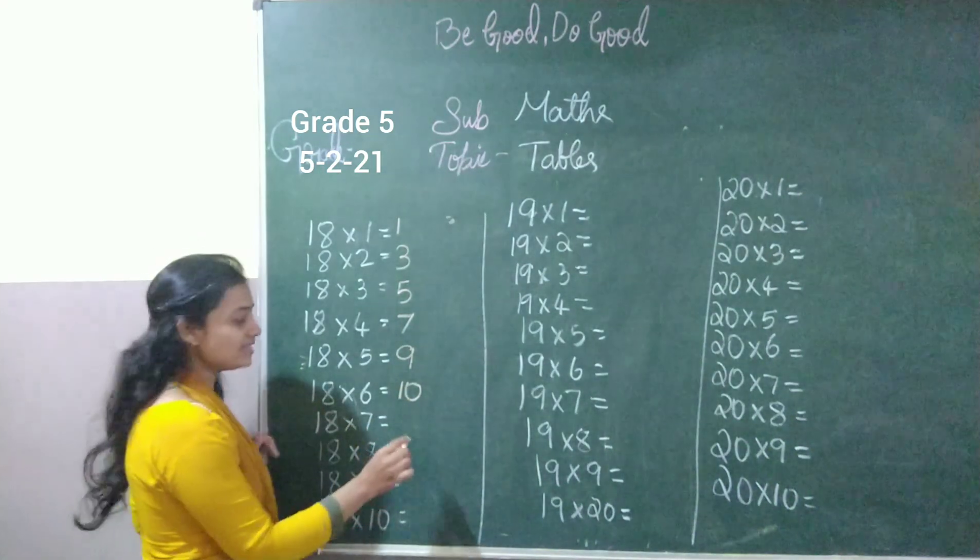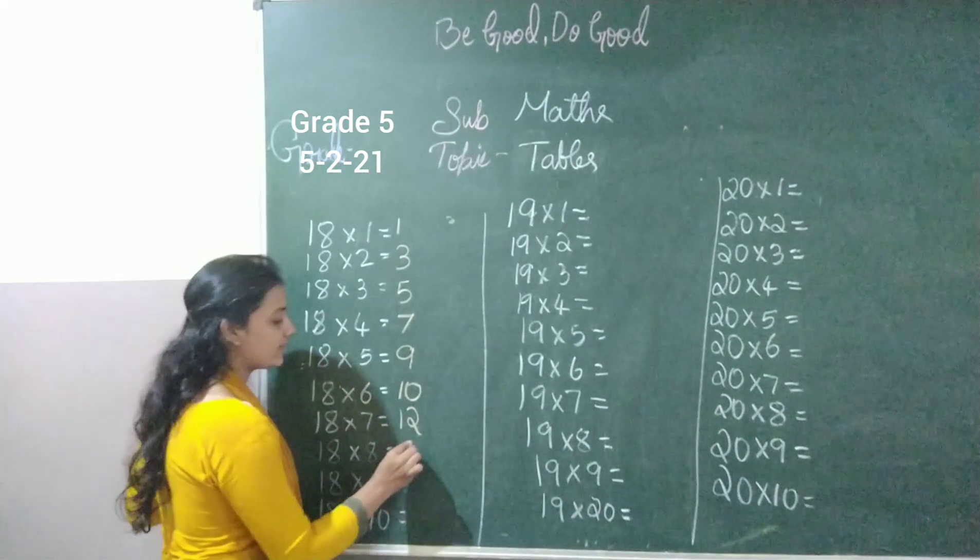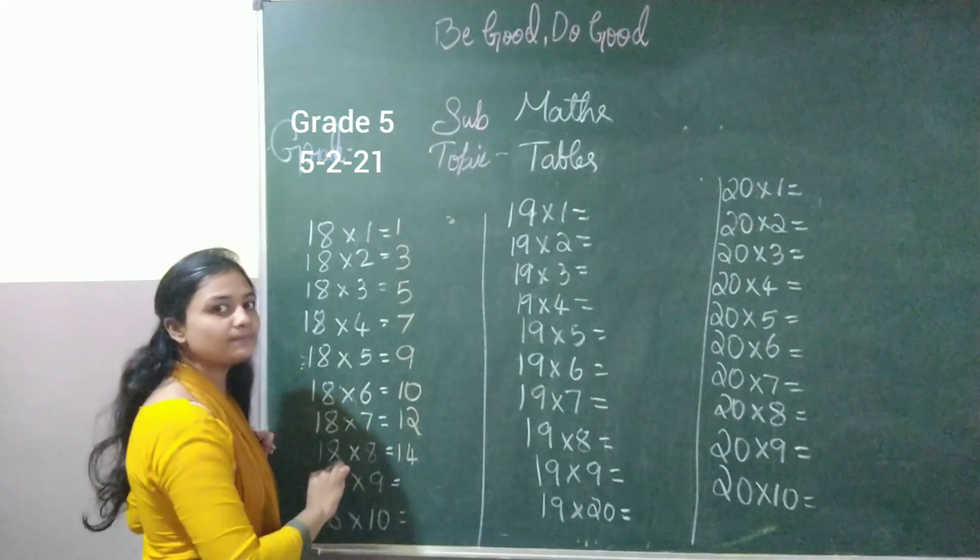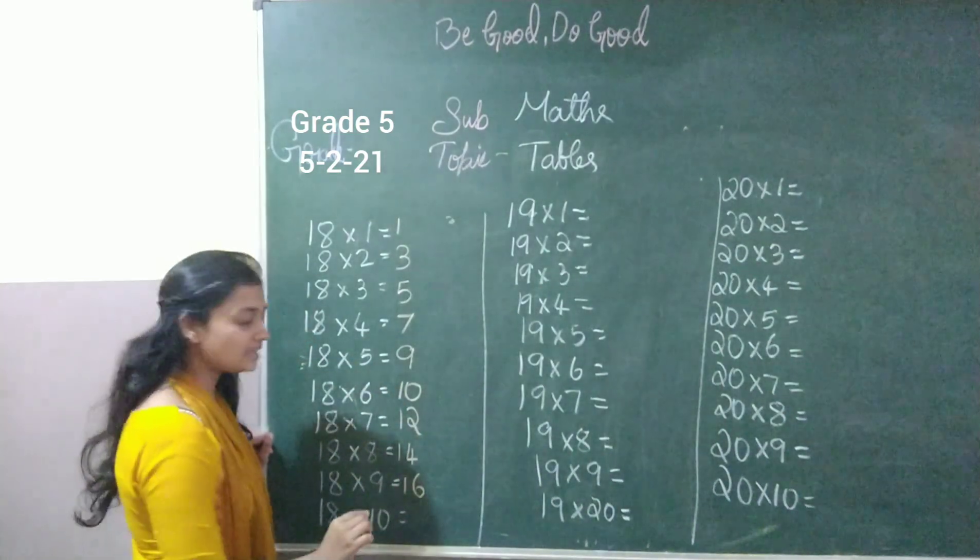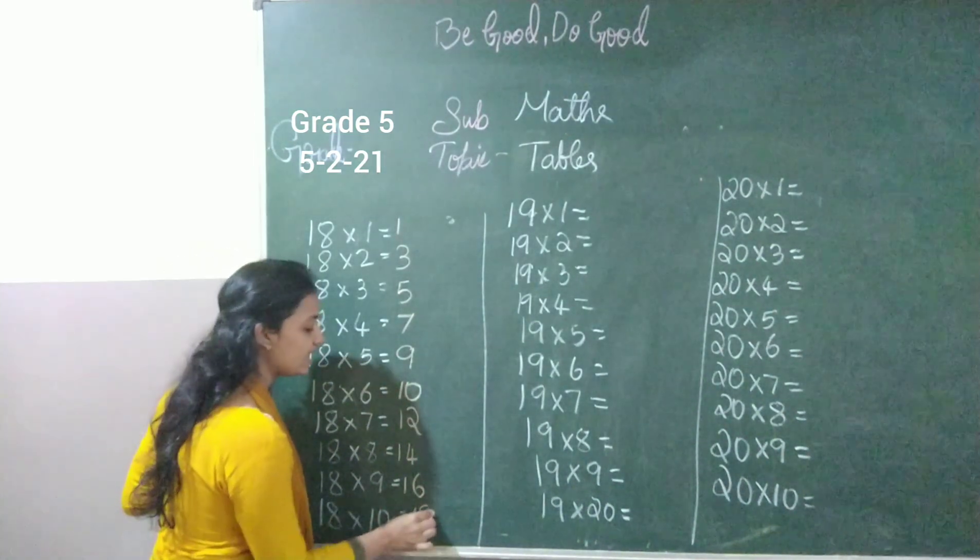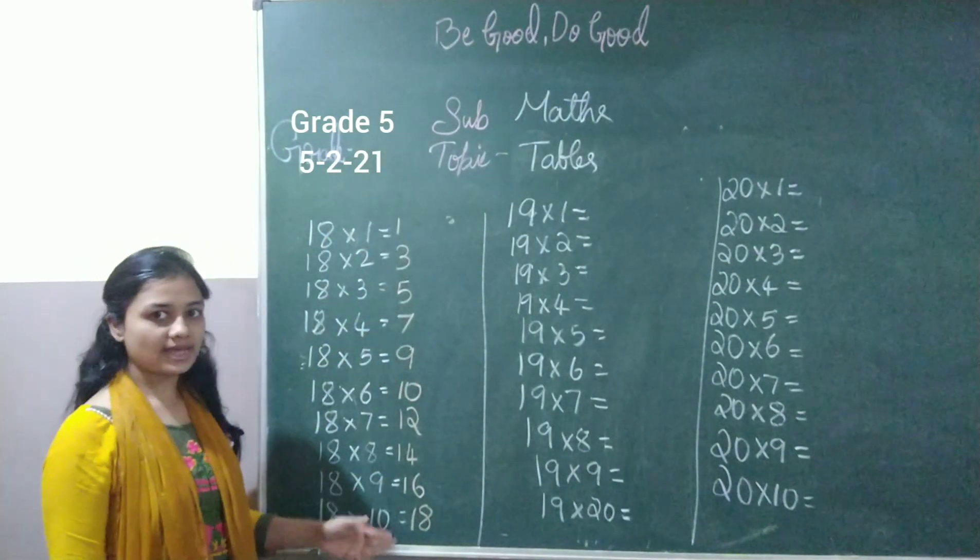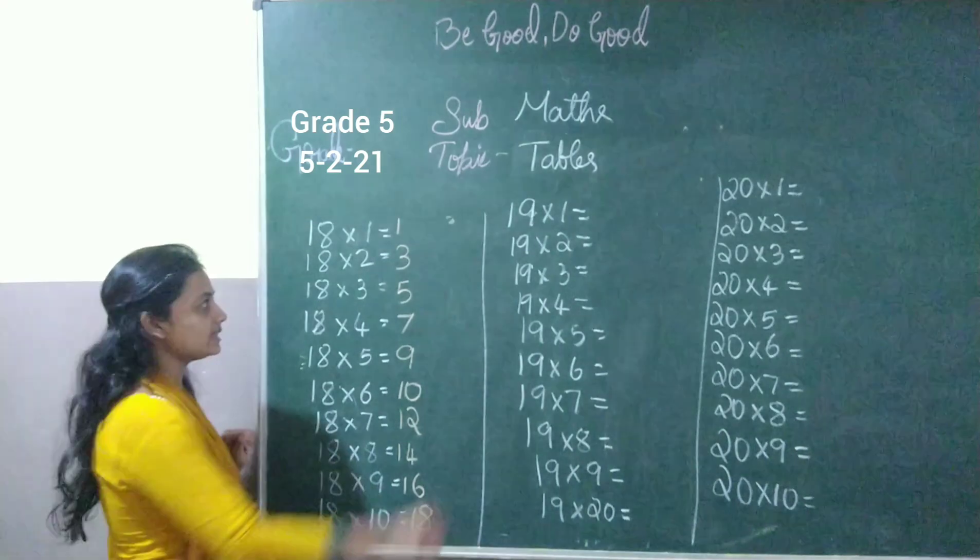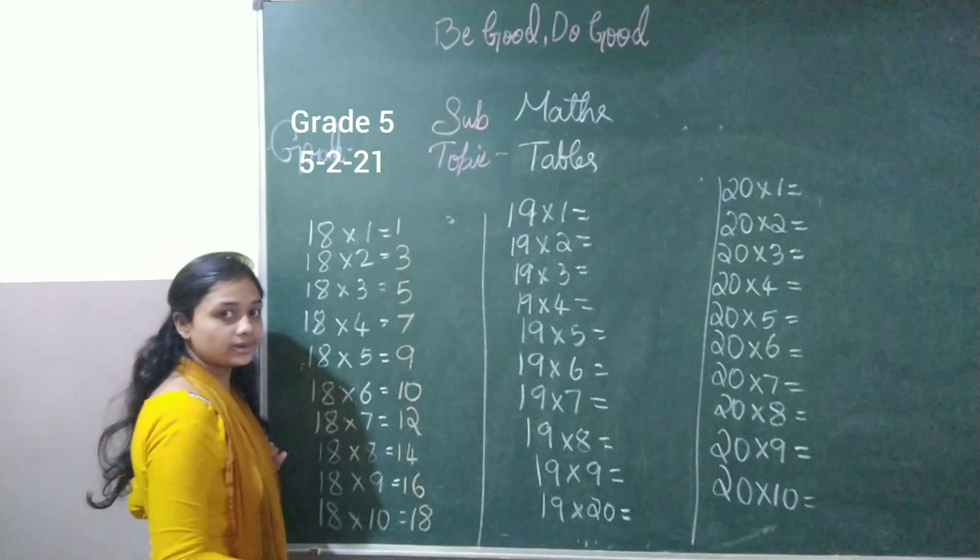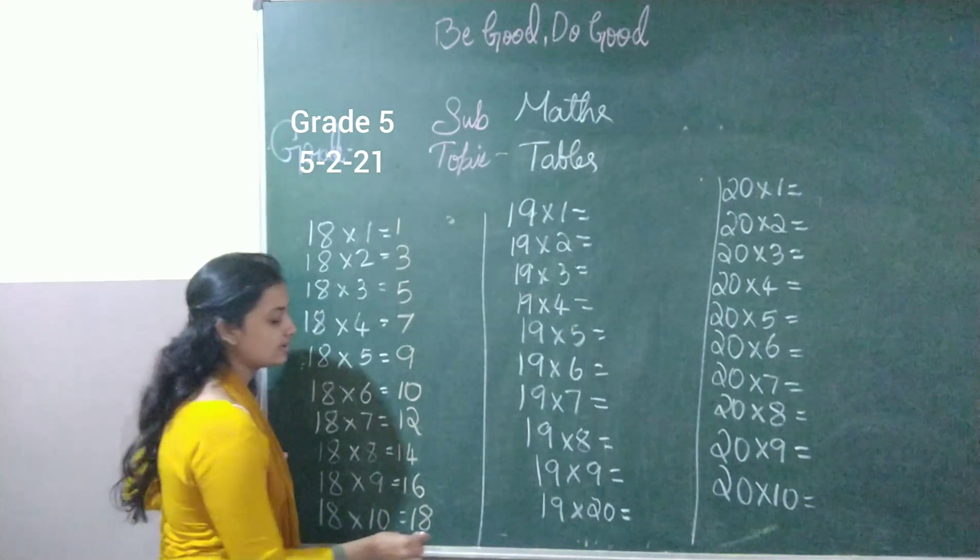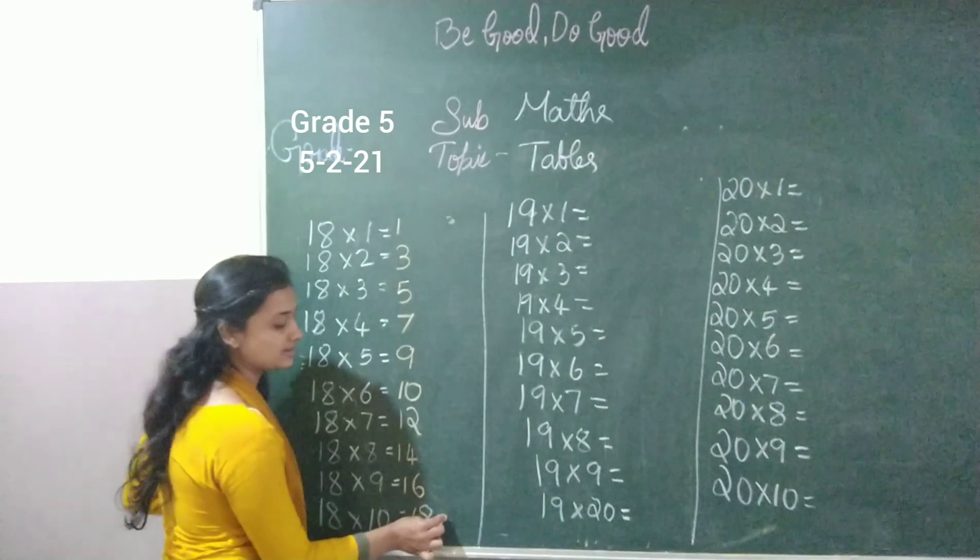So after 10, I will skip 11, write 12, skip 13, write 14, skip 15, write 16, then skip 17 and write 18. So this is the number that I have written. Now I have to write the same number. So same as how you wrote it in 8 tables. I will go from the bottom and write the even number.